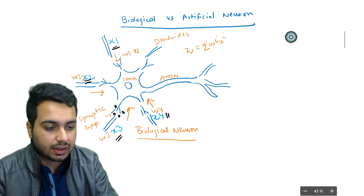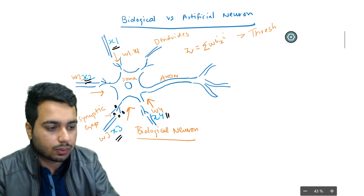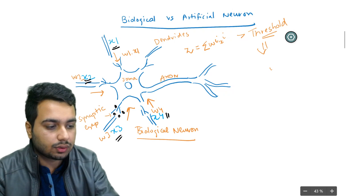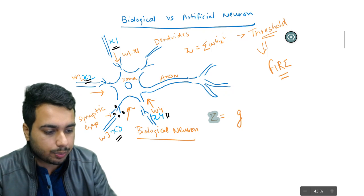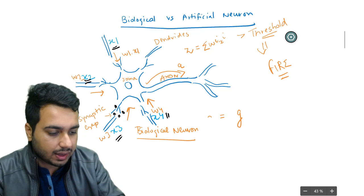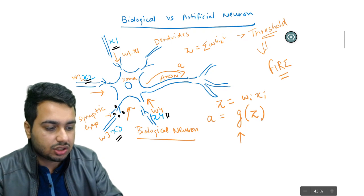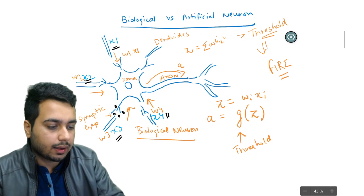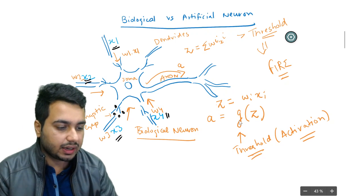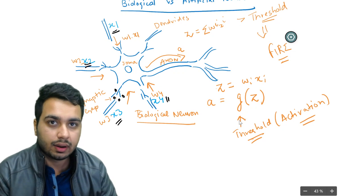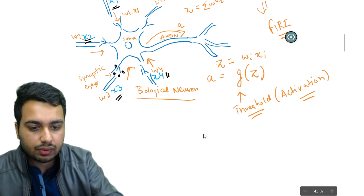We have heard that a neuron will fire or not. Some neurons fire based on their input and some will not. That firing depends on a function called the activation function. When the weighted sum z is greater than some threshold value, we say the neuron is going to fire. The output a is equal to g of z, where z is the weighted sum and g is the activation function. In practice, g can be a sigmoid function.